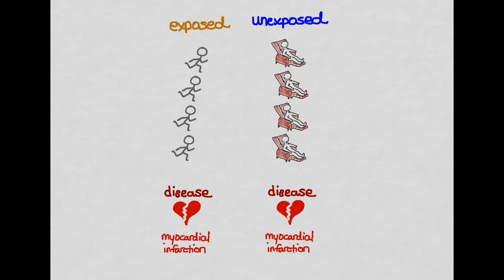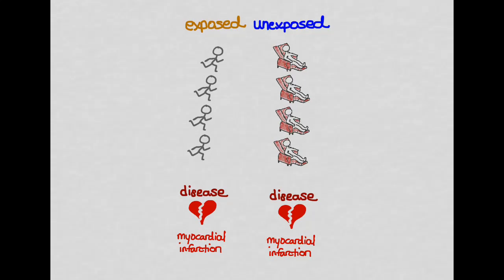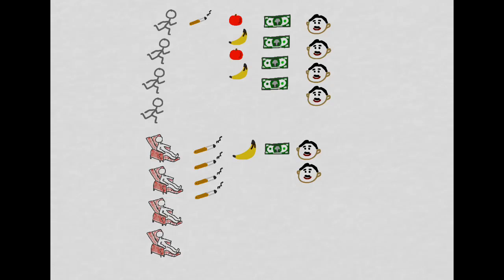In a cohort study, we divide everyone into exposed and unexposed, and then we track whether there's a difference in the incidence of myocardial infarction as a function of the exposure. But if we have confounding variables and we do find a relationship between the exposure and the disease, that relationship may be due to the confounding variables rather than the exposure. So we want to look at the confounding variables as a function of exposure group.